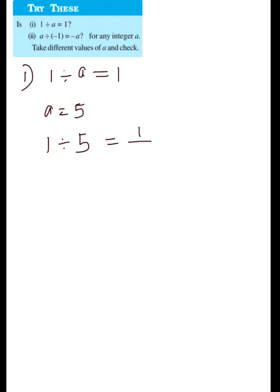1 divided by 5 means you will get it written out as a fraction, and this will not be equal to 1. So you can say that 1 divided by A is not equal to 1.